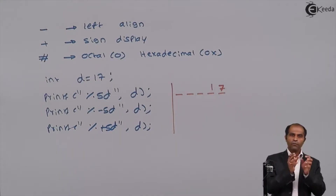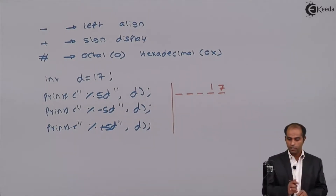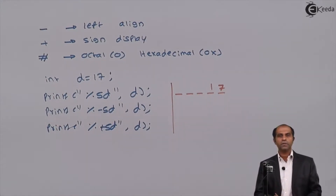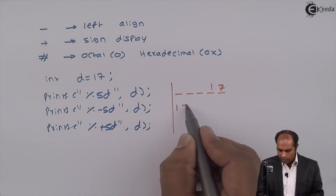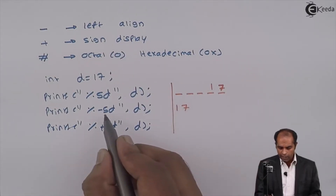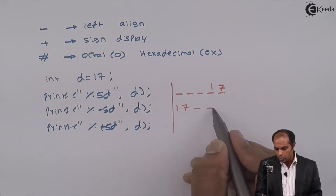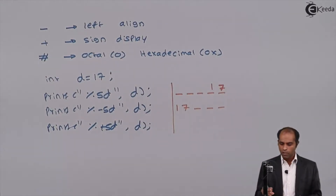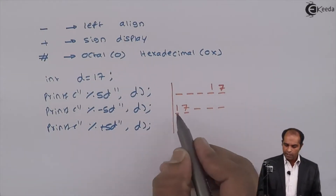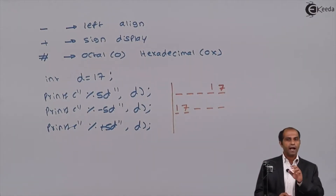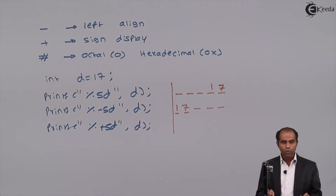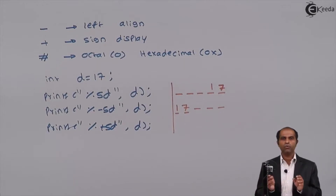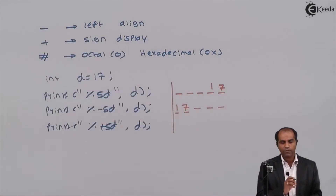What if you want the reverse — to display the number first and then generate spaces? In that case a minus flag is used, which is for left alignment. It says: first display the digits one seven, then allow the control to move by three spaces. The number is displayed on the left-hand side and the spaces are left after it. So basically the minus flag moves the output from right to left, hence we call it the left aligned flag.